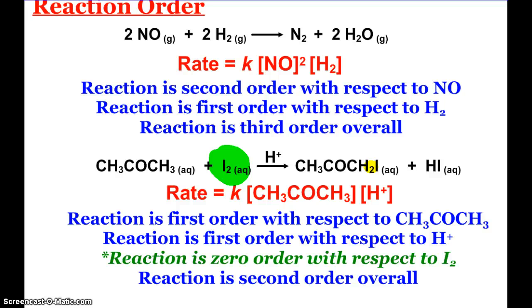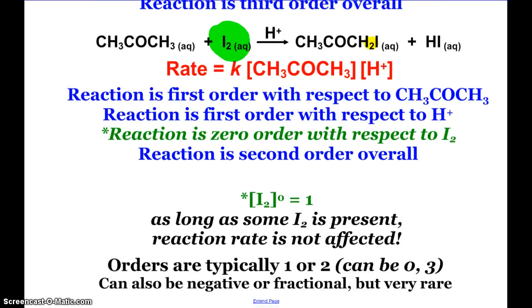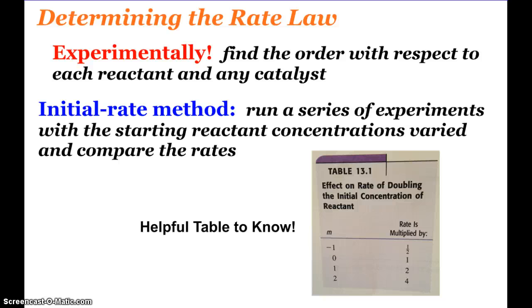Overall, this reaction is second order, since 1 plus 1 is 2. If we have something to the zero order, that is of course a 1 in math. As long as some iodine is present, the overall reaction rate is not affected. Our orders are typically 1 or 2 and can be 0, can be 3, especially the overall order. They can also be negative or fractional, but very rare. If you're doing a calculation and you get an order of 5, you probably did something wrong.